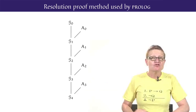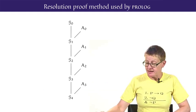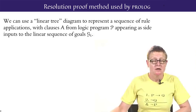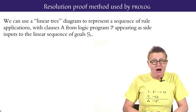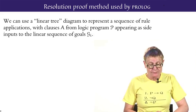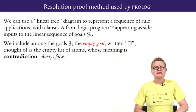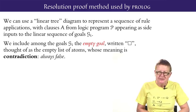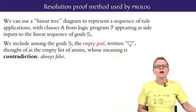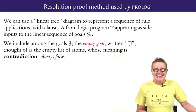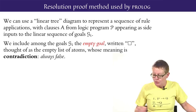A linear tree diagram can be used to depict a sequence of rule applications producing a sequence of goals with clauses A from the logic program P appearing as side inputs to the linear sequence of goals. Allowed among the goals is the special case of the empty goal denoted by the square symbol and thought of as the empty list of atoms whose meaning is contradiction or always false.